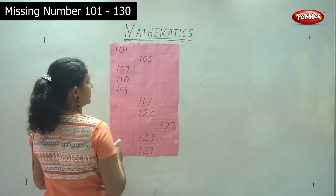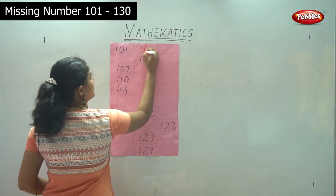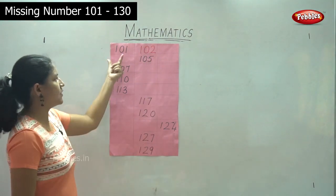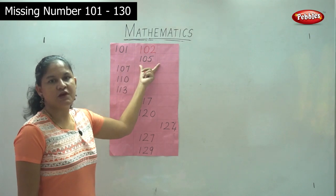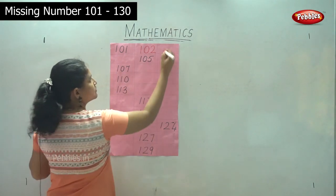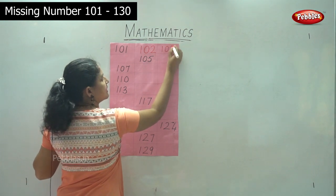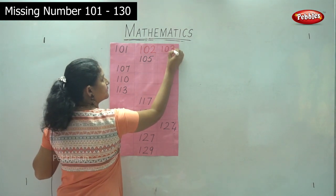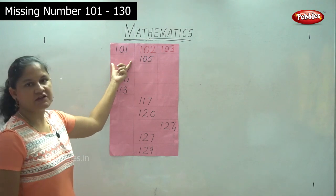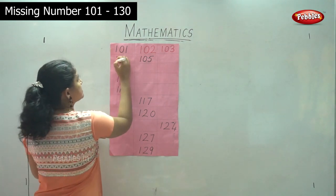After 101 it is 102. So after 101 we will write 102. And after 102 comes 103. After 103, we have another blank which will be 104.